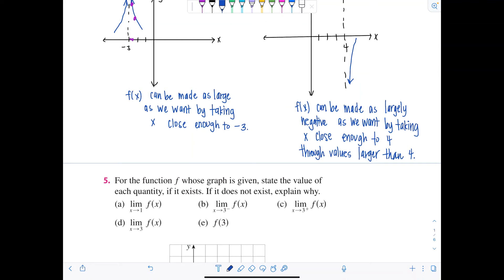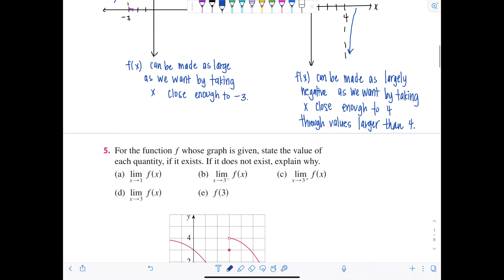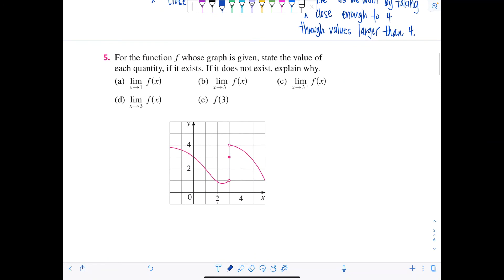Okay, fun part. For the function f whose graph is given, state the value of each quantity if it exists. If it does not exist, explain why. Okay, 5a, the limit as x approaches 1. So where is 1? 1 is right there. What is the limit as x approaches 1 of the function?